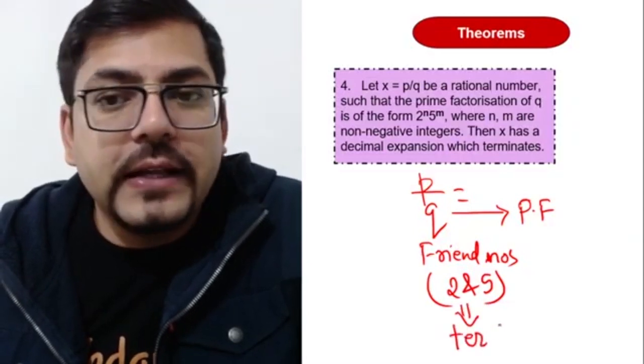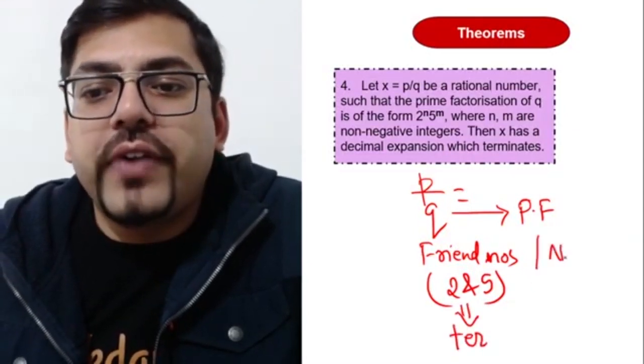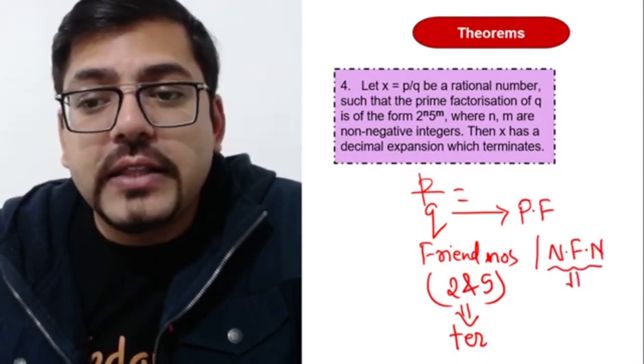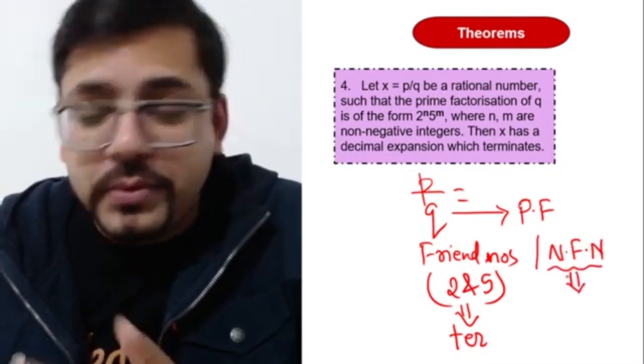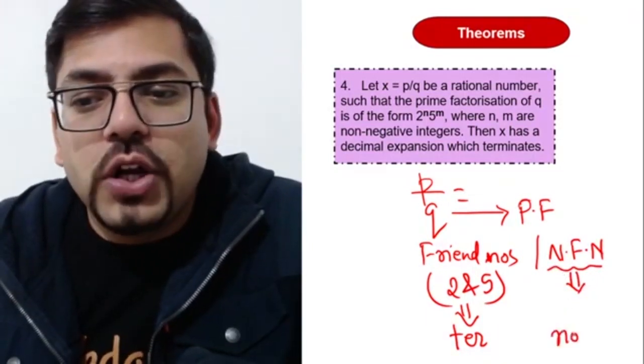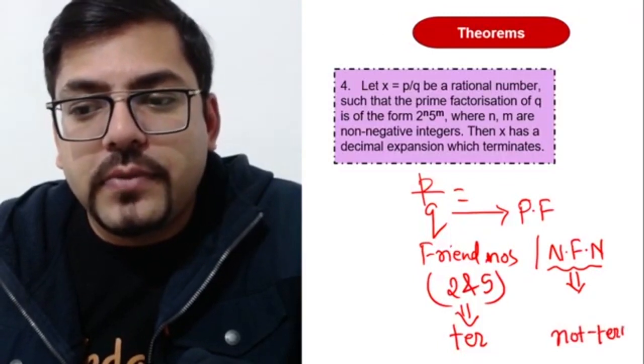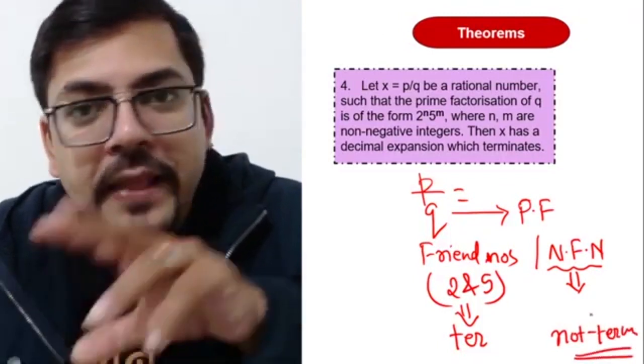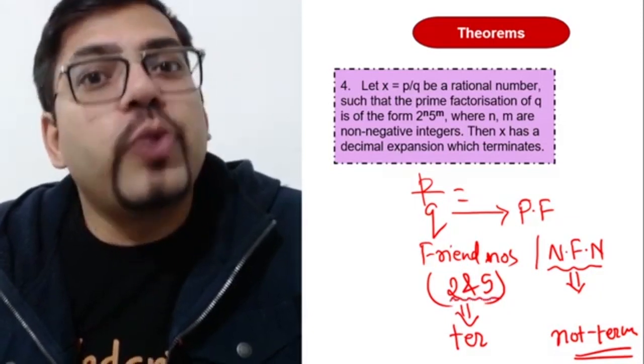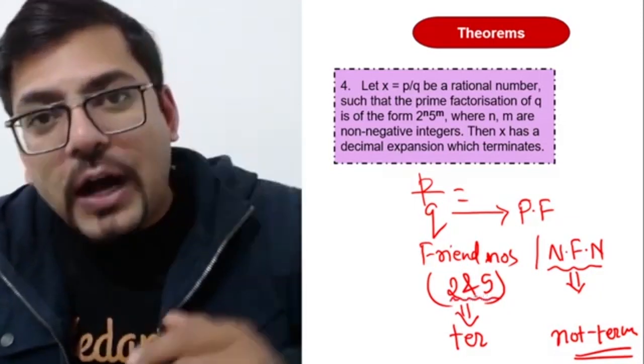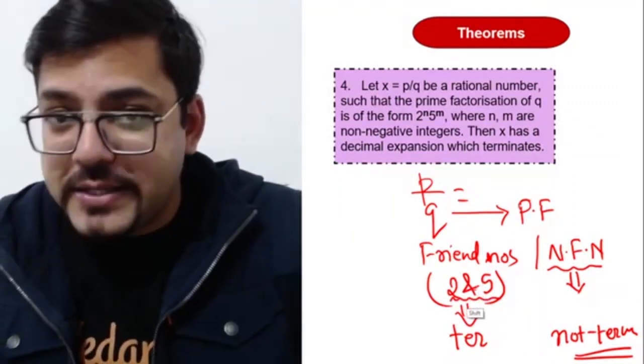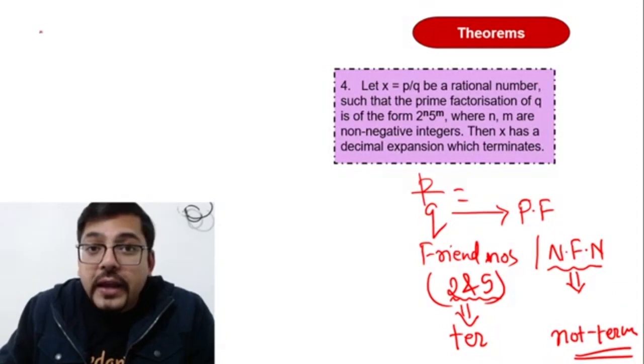And if you have only 2 and 5, then surely this fraction is going to be terminating. And if you have non-friend numbers - non-friend numbers means the number could be anything apart from 2 and 5 - so in this case you will have non-terminating decimal. I guess we have talked about this. Next thing, here is what is important: when you have 2 and 5, after how many places will the decimal terminate? That is the next important part in this chapter.